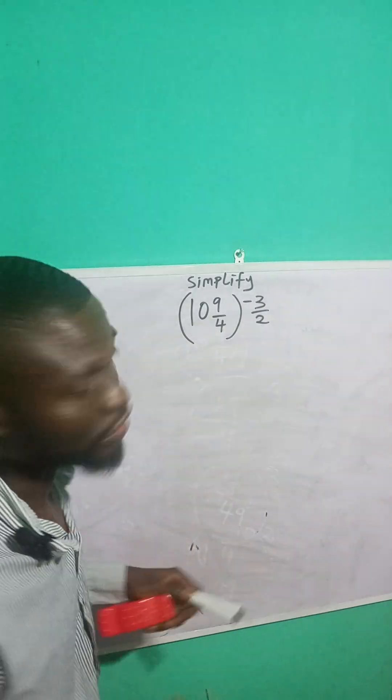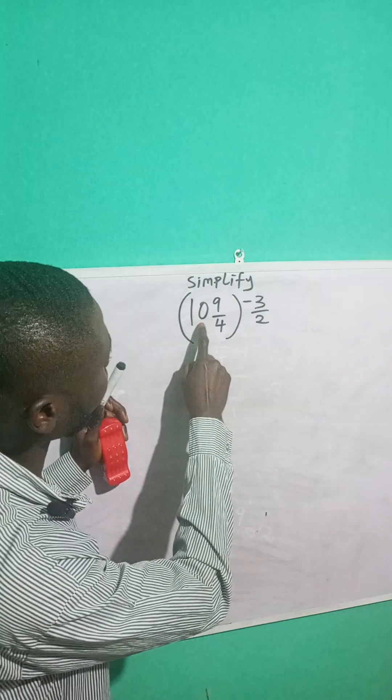So let's convert this to an improper fraction. 4 times 10 is 40. 40 plus 9 is what?